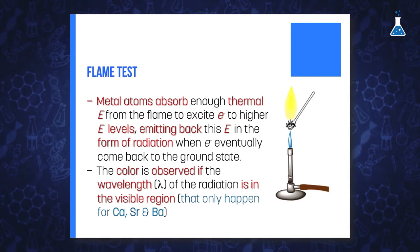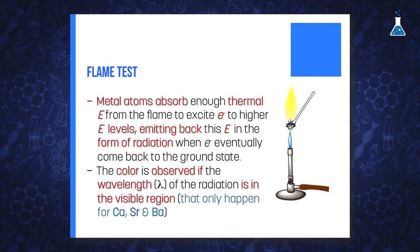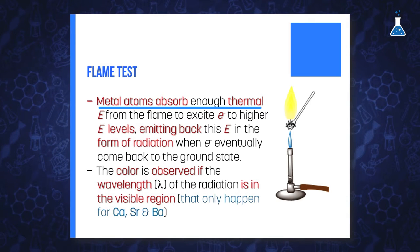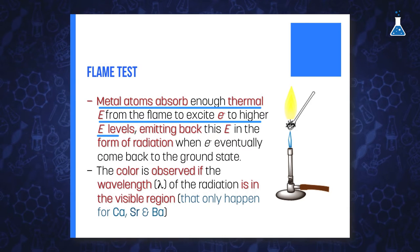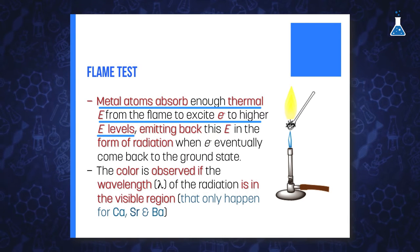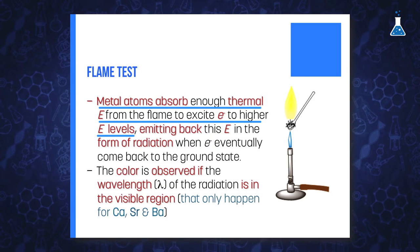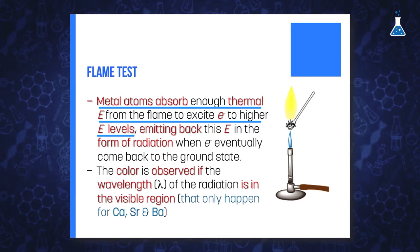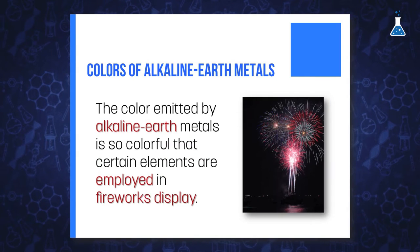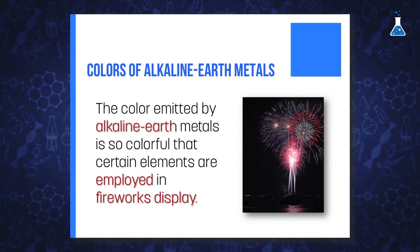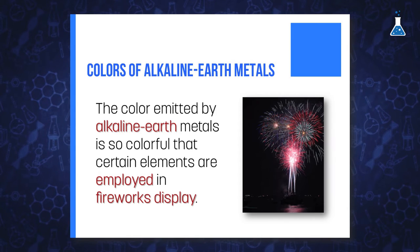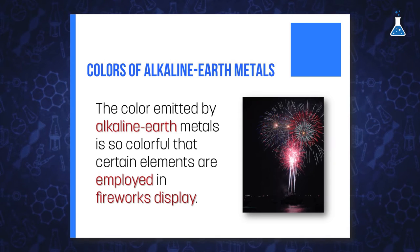The explanation of this color is the same as discussed previously with alkali metals: the metal atom absorbs thermal energy from the flame, and some electrons get excited by jumping to a higher energy orbital. This is an unstable state, and when the electron eventually returns to the ground state, it releases the energy mostly in the form of radiation. In the case of alkaline earth metals, the colors emitted are so vivid that certain alkaline earth metals are used in firework displays.